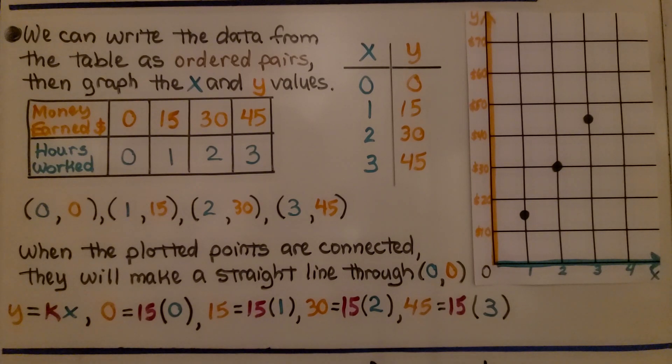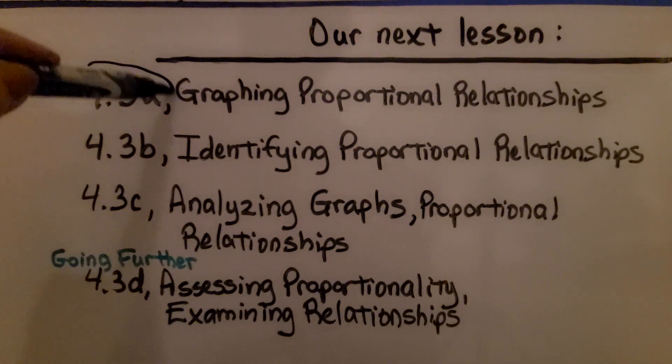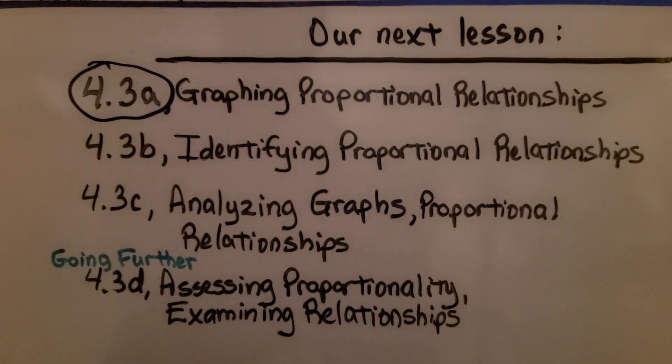Just remember, when you're writing your ordered pairs, we have x then y in alphabetical order as x, y, z. x is always first, it's on the left. We're finished with 4.3a. We're moving on to the second lesson in 4.3.